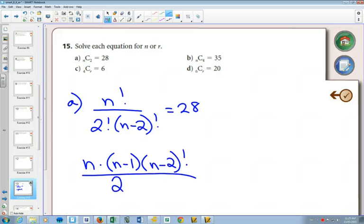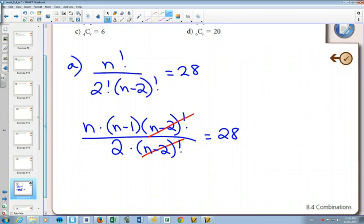Is it all right if I write 2 factorial just as 2? These will simplify. Still equal to 28. So now we have n times n minus 1 all divided by 2 equals 28.